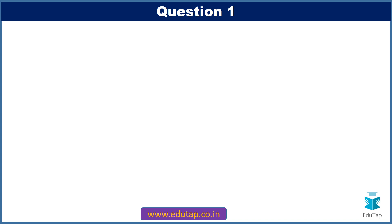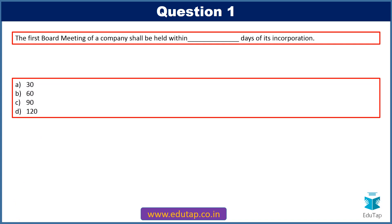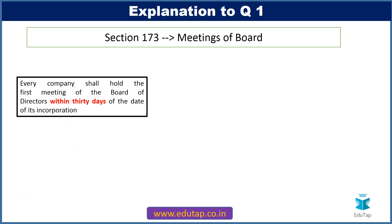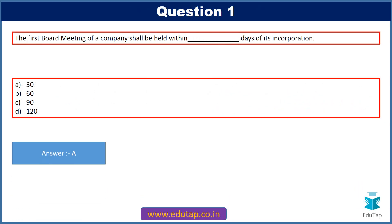Question number 1: The first board meeting of a company shall be held within how many days of its incorporation? Options are 30 days, 60 days, 90 days, or 120 days. Section 173 of the Companies Act covers meetings of the Board of Directors. Chapter 12 runs from Section 173 to Section 195, approximately 24 sections. It states every company shall hold the first meeting of the Board of Directors within 30 days of the date of its incorporation, with minimum four board meetings per year and not more than 120 days gap between two consecutive board meetings. The correct answer is option A — 30 days.